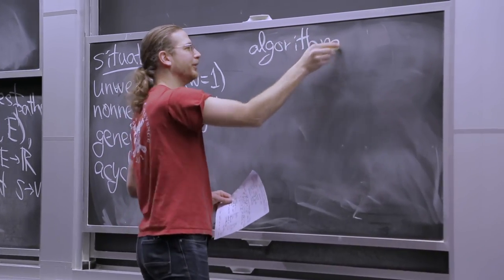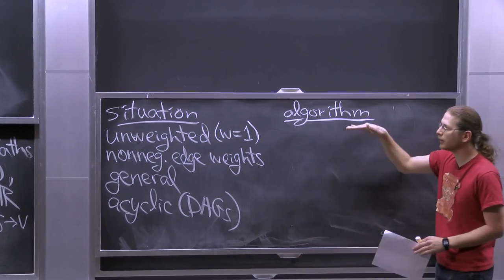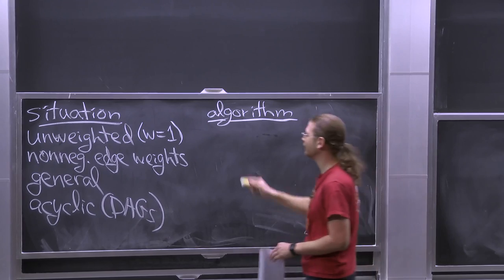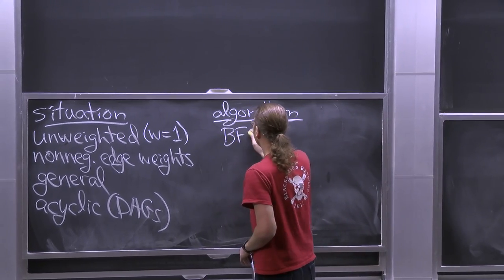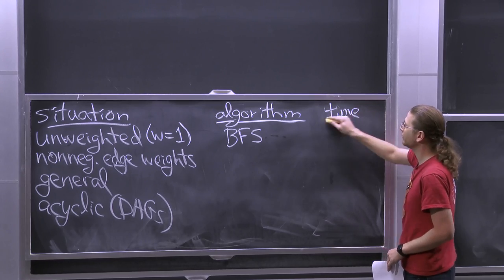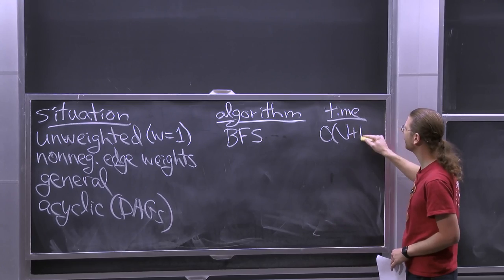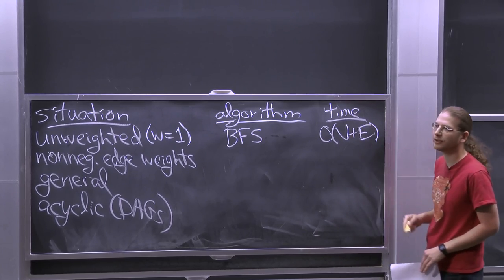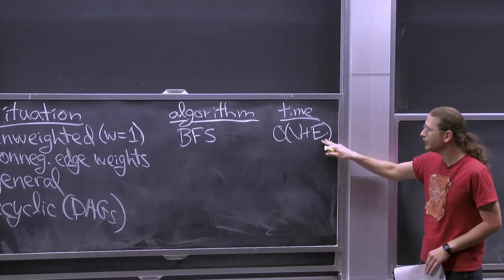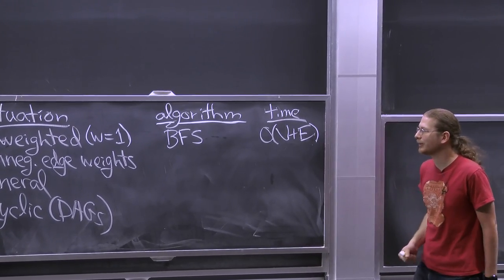These are some interesting special cases. You should have seen in 6.006 algorithms for each of them. What's a good algorithm for single source shortest paths in an unweighted graph? BFS — breadth first search. That takes O(V + E). That's for graphs — V + E is considered linear time. That's how long it takes to represent the input, and BFS is optimal against that.